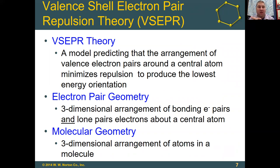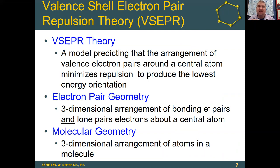We look at electron pairs — including both lone pairs and bonds — to get what's called an electron geometry. Then we look at just the atoms to get the molecular geometry or molecular shape. The electrons influence how molecules behave and interact with receptors, but where the atoms physically are is what's most visible with electron microscopes and similar tools.